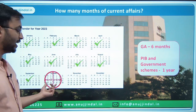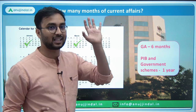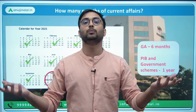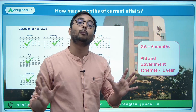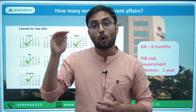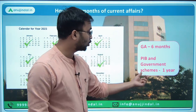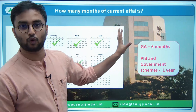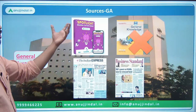This is compulsory for the exam. If the exam comes in November, similarly calculate the previous months accordingly. Mind you, the competition in NABARD Grade A exam has increased, and the difficulty level has also increased. So one year of PIB and government schemes is mandatory, and six months of General Awareness is the minimum period. Now we know how many months of current affairs to cover. Let's start with General Awareness.